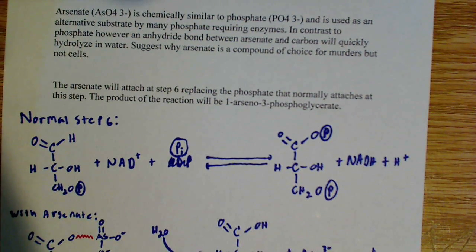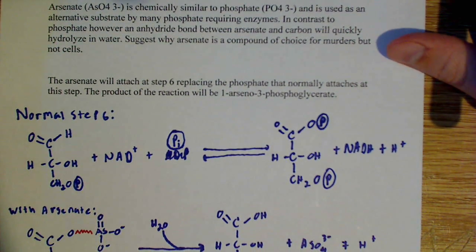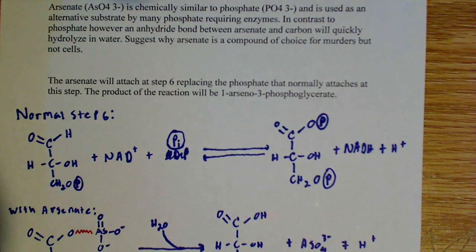The question asks why arsenate is a compound of choice for murderers but not cells. The first thing I want to talk about is that the metabolic pathway I'm going to be discussing is glycolysis, and the arsenate will attach at step six.